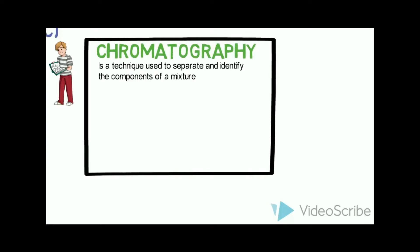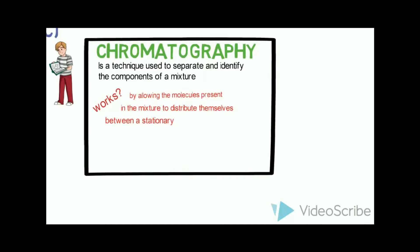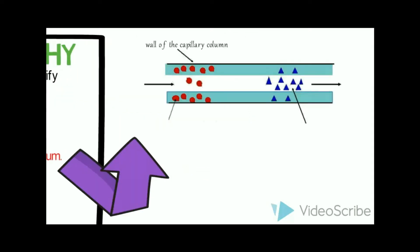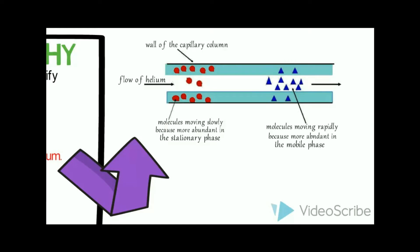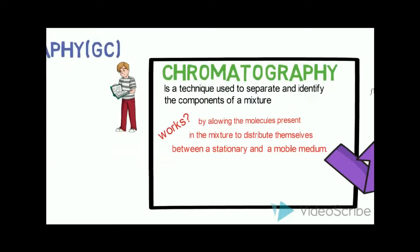Chromatography is a technique used to separate and identify the components of a mixture. It works by allowing the molecules present in the mixture to distribute themselves between a stationary and a mobile phase. Looking at this figure: here we see the wall of a capillary column, flow of helium, molecules moving slowly because they are more abundant in the stationary phase, and molecules moving rapidly because they are more abundant in the mobile phase. So molecules that spend most of their time in the mobile phase are carried along faster.